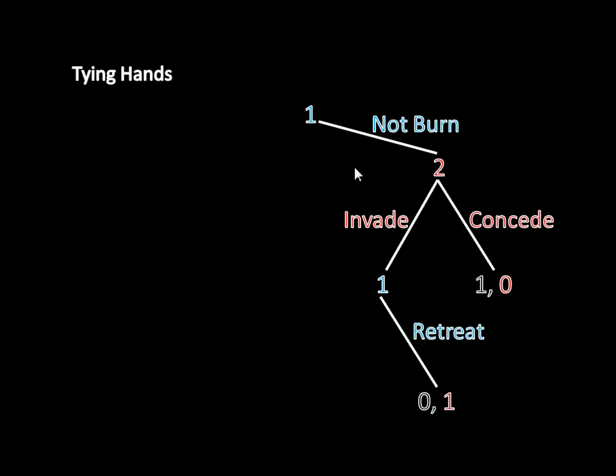Now consider how this affects Country 2's decision here. So again, imagine Country 1 doesn't burn and Country 2 chooses between invading and conceding. Well, if Country 2 invades, it knows that Country 1 will retreat, which means Country 2 gets one. And if Country 2 were to concede, it doesn't get control over the island, and so it gets zero. One is greater than zero, which means Country 2 will invade if Country 1 does not burn the bridge. So that's the outcome on this side of the game tree.